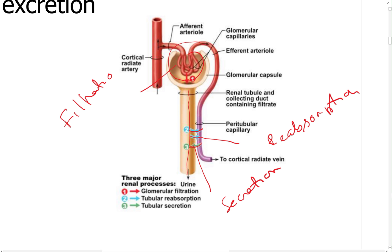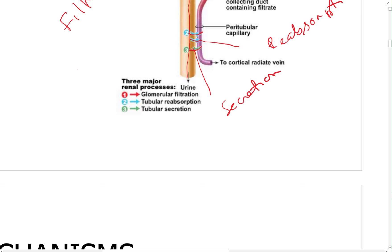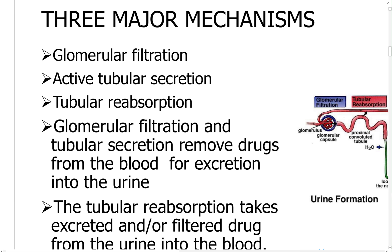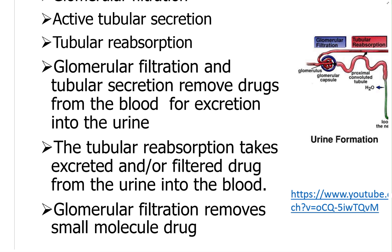So as you have seen, there are three major processes: filtration, reabsorption, and secretion. You have to remember how these three major processes influence drug excretion — glomerular filtration, active secretion, tubular secretion, and reabsorption. Glomerular filtration removes drug from the blood for excretion in the urine, and tubular reabsorption takes excreted or filtered drug back into the blood. Tubular filtration removes only small molecules.